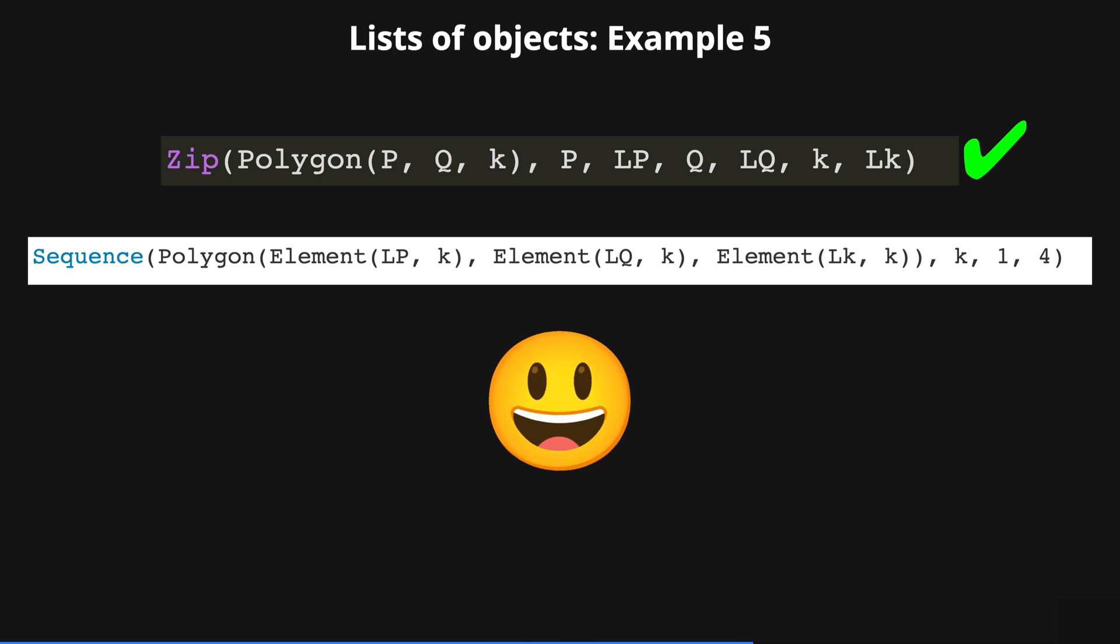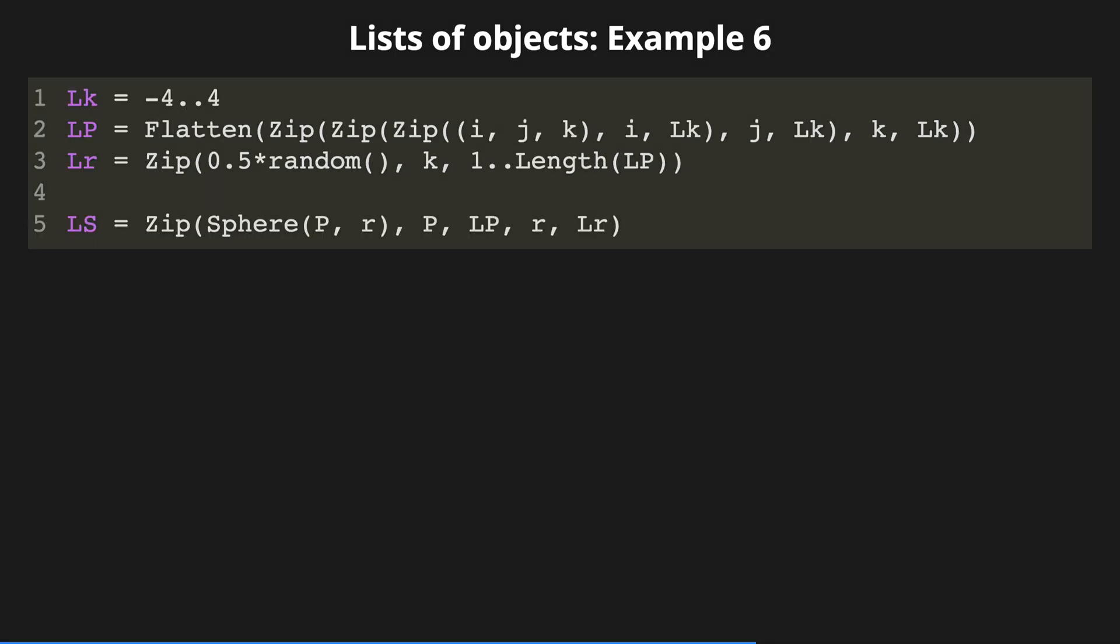Okay, one last example to explore the great potential to use the zip command instead of the sequence command. Here we are going to create a three-dimensional array of spheres with random radii.